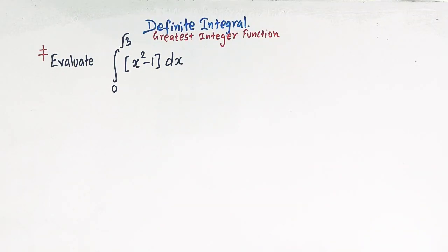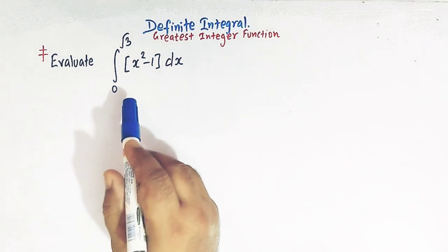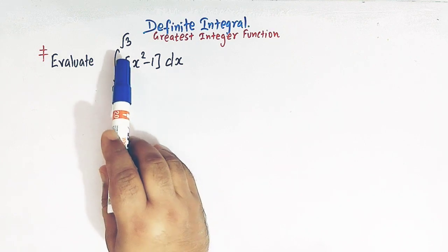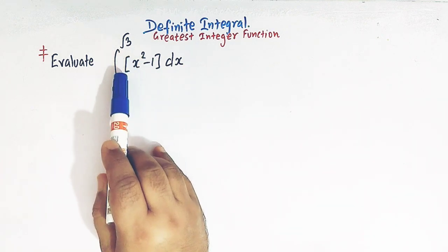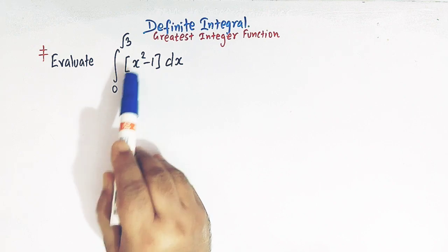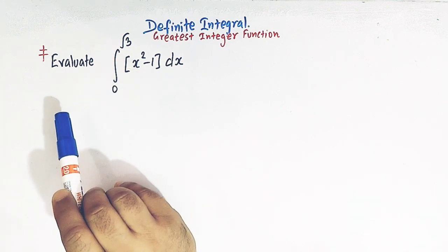Hello viewers. In today's class we are going to discuss one important problem from definite integrals involving the greatest integer function. We have to evaluate this integral from 0 to square root of 3, where the integrand is the greatest integer of x squared minus 1.